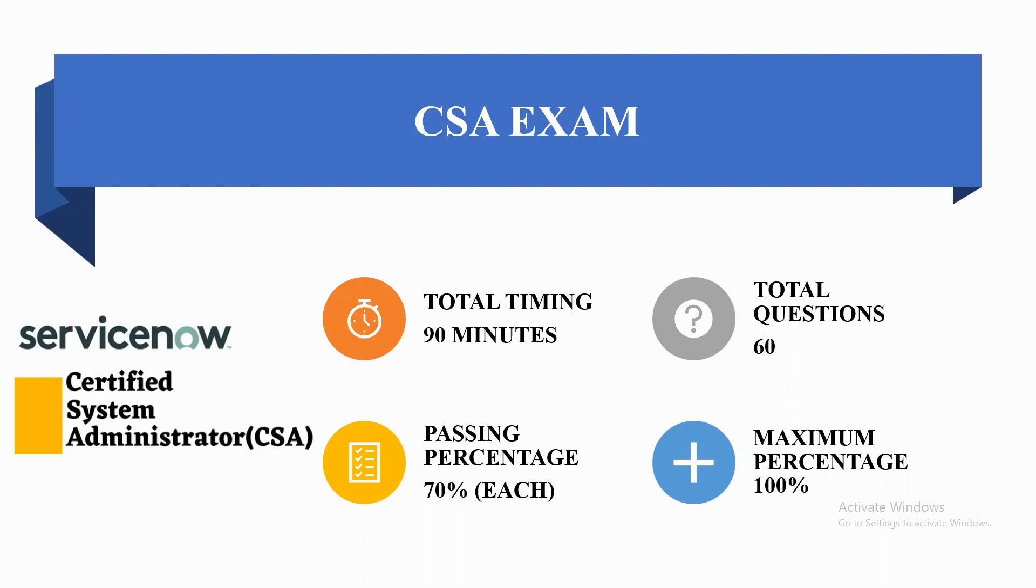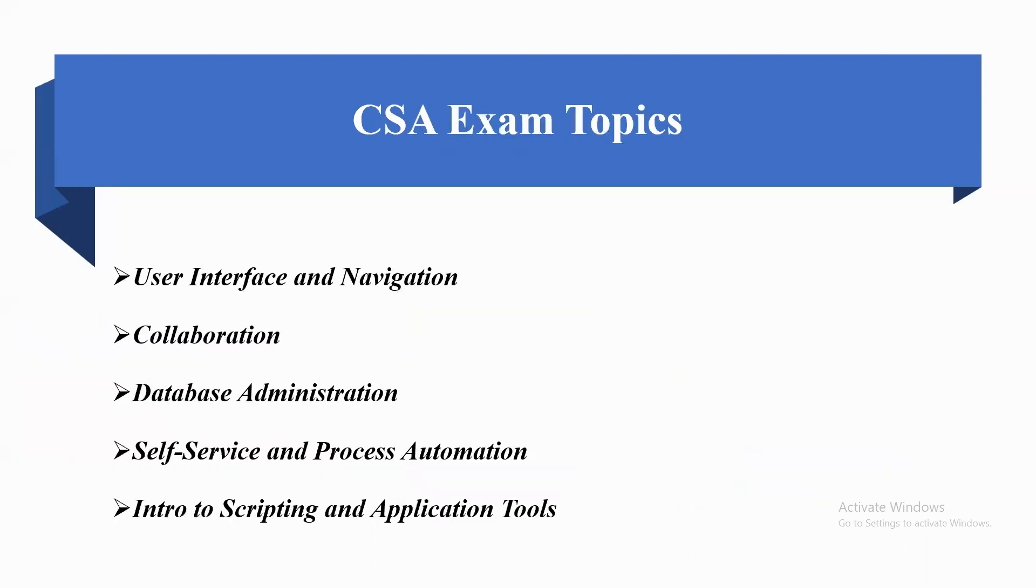In this exam, total timing will be 90 minutes, total number of questions will be 60, passing percentage will be 70%, and maximum percentage will be 100%. If we are going to talk about the topics in CSA exam, there are five main topics that are included in this exam.